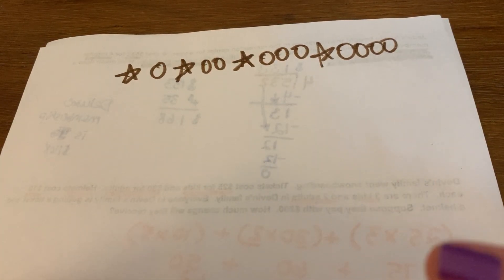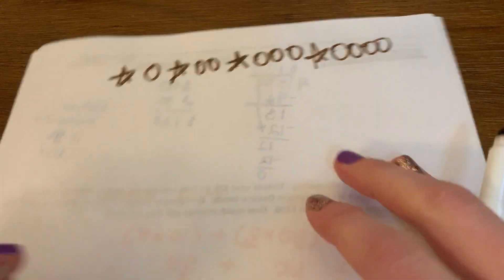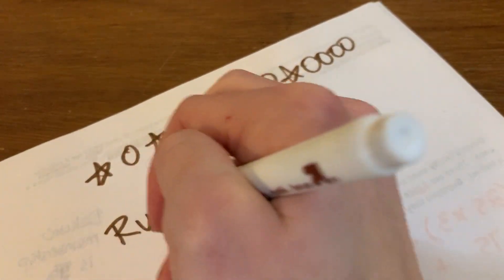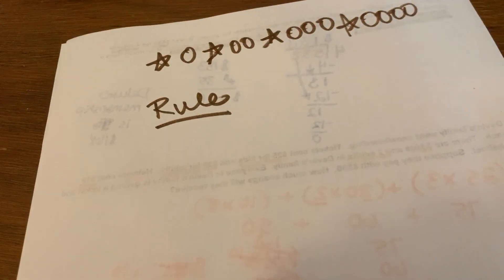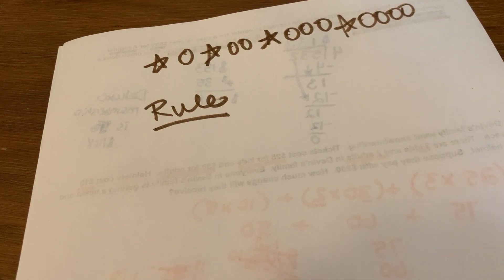This is not the same with sequences. Sequences are more of a rule. Sequences have rules. They say, well, you're adding 25 each time.